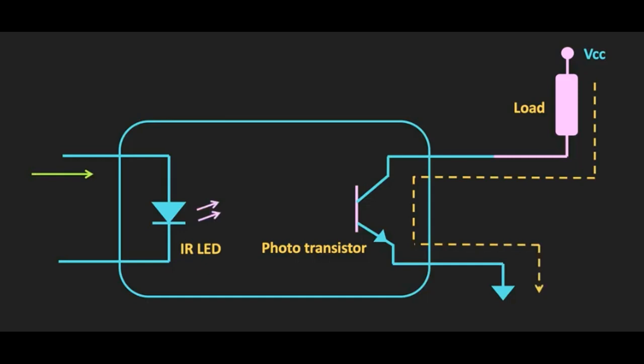On input side LED converts electrical signal into light signal and on the output side this photosensitive detector receives the light signal and converts it to the electrical signal.